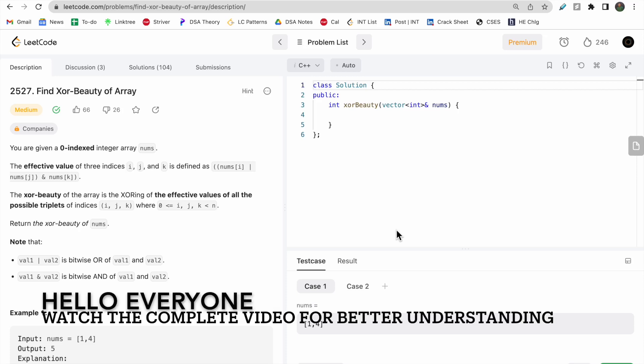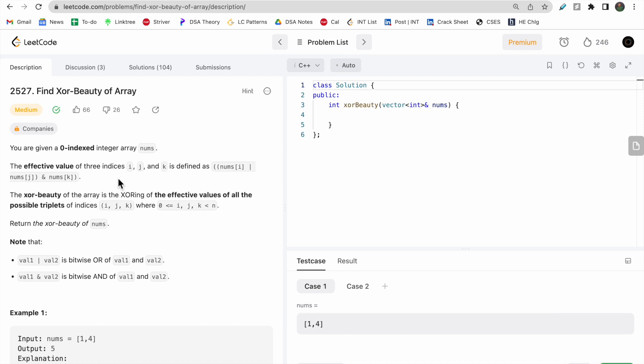Hello everyone, welcome to Deep Course. Today we will discuss LeetCode question 2527: Find XOR Beauty of Array. You are given a zero-indexed integer array nums.